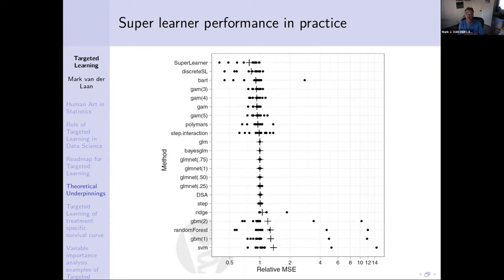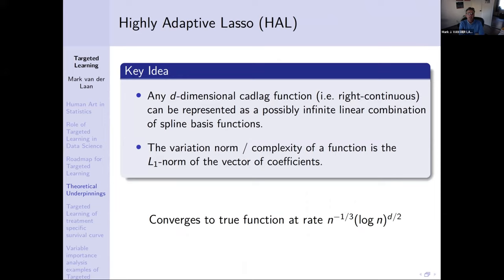The super learner is a way that, as a whole community, we can create very powerful algorithms by incorporating each algorithm proposed by researchers, making it more powerful than all its parts. Still, if you want to claim that the super learner has a certain rate of convergence, you want to make sure at least one estimator in your library converges at a rate at least as fast as n to the minus quarter, because that's necessary for claiming that the targeted maximum likelihood estimator is efficient and that the theory applies.